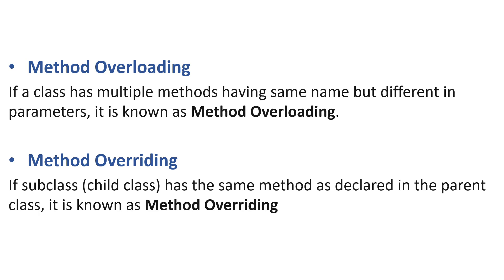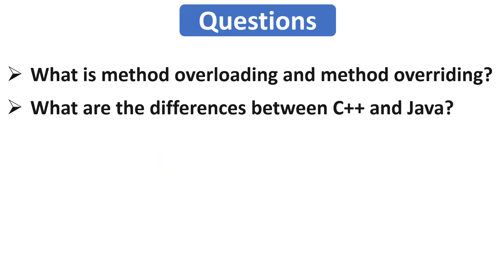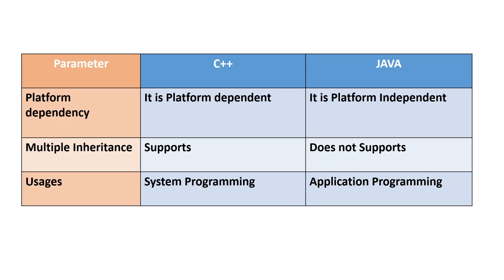Our next question is: what are the differences between C++ and Java? Both are object-oriented programming languages but they have some differences. On the basis of platform dependency, C++ is platform dependent while Java is not. On the basis of multiple inheritance, C++ supports multiple inheritance while Java does not, but in Java we can achieve it through the interface concept. C++ is mainly used for system programming while Java is mainly used for application programming, such as developing web and mobile applications.